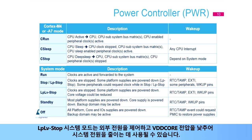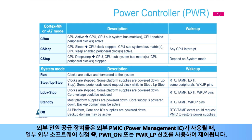LPLV-stop system mode can be used to control external supplies, as well as reducing the VDD core voltage to reduce system power. External power supplies are controlled using dedicated power-on or power-LP signals, in addition to external software settings when an external PMIC is used.